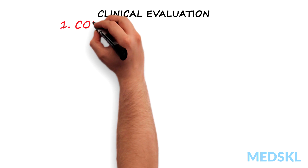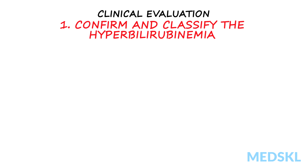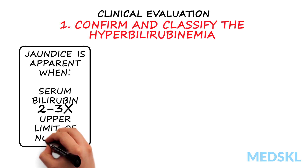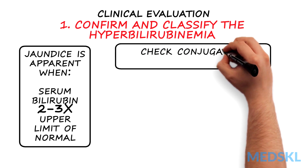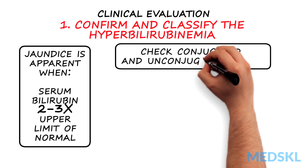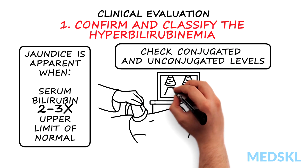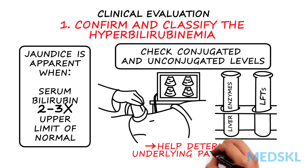The clinical evaluation of jaundice requires a step-wise approach. First, confirm and classify the hyperbilirubinemia. In general, jaundice doesn't become apparent until the serum bilirubin levels are 2-3 times the upper limit of normal, usually greater than 50 micromoles per liter or 3 mg per deciliter. When checking bilirubin levels, it's important to also check for conjugated direct and unconjugated indirect bilirubin levels. This, along with the results of the abdominal ultrasound, liver enzymes and liver function tests, will help you determine the underlying pathology.